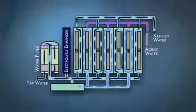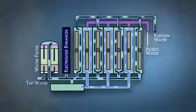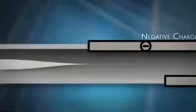The water passes over the plates. The minerals in the water are separated into two streams of water, one alkaline and one acidic.